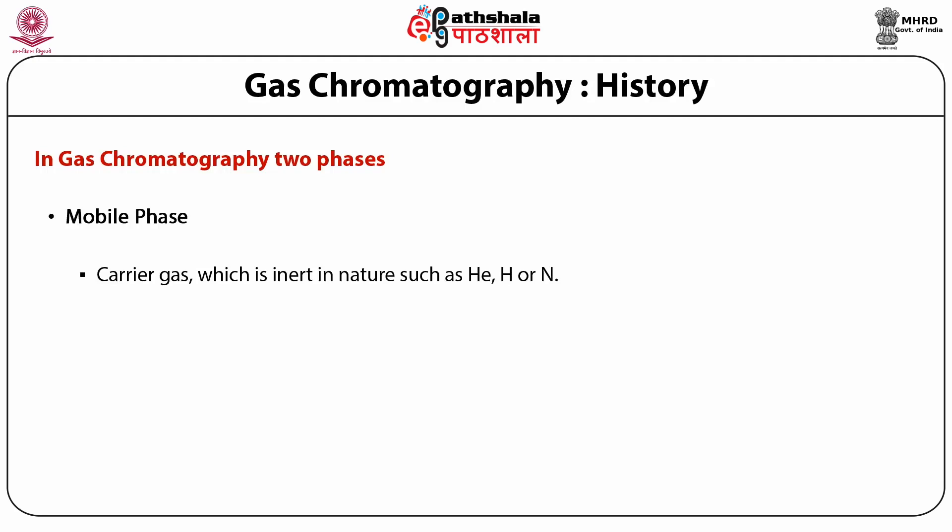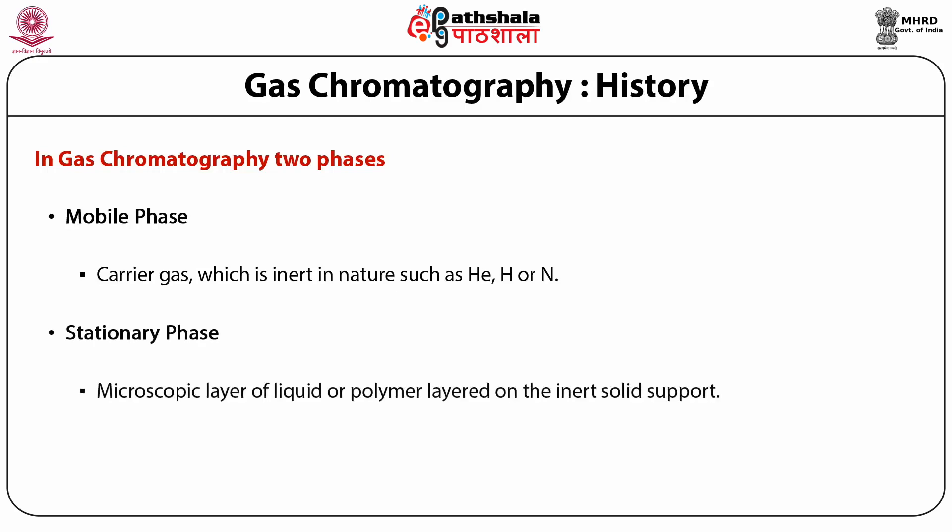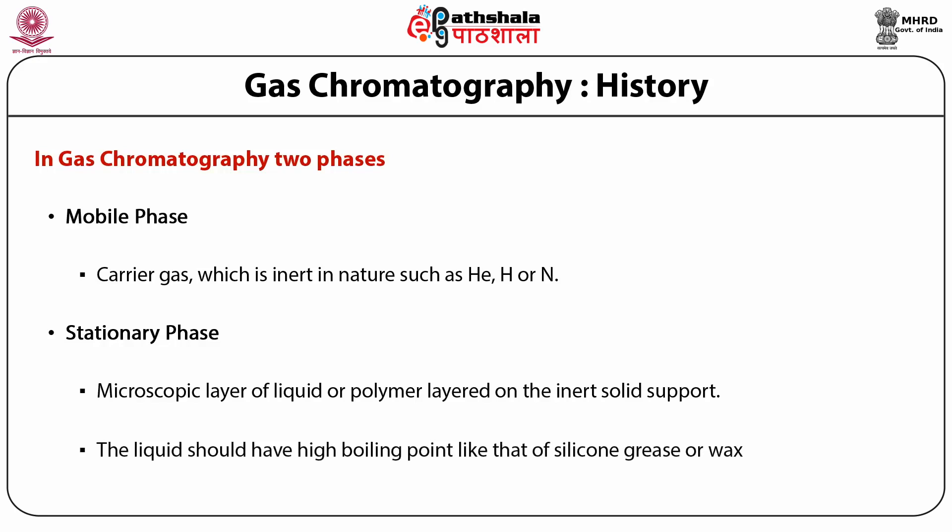The separation column, that is the stationary phase, can be either a microscopic layer of liquid or polymer layered on an inert solid support inside a column made of metal or glass. The liquid material used for stationary phases should have a high boiling point, like that of silicon grease or wax. An oven and detector are also required, and to obtain better results and for maximum column efficiency, there should be an optimum flow rate of the mobile gas phase.